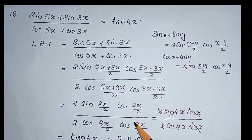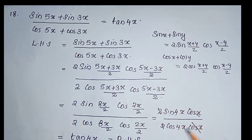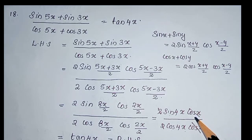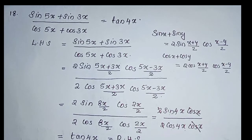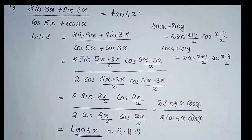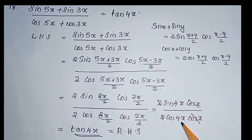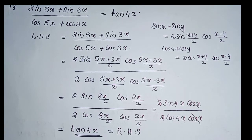Solving this, we got 2 sin 4x cos x divided by 2 cos 4x cos x. Here, 2 cos x is common to both numerator and denominator. We can cancel this. That is sin 4x divided by cos 4x. Since sin x divided by cos x equals tan x, we can write that is equal to tan 4x. That is RHS.